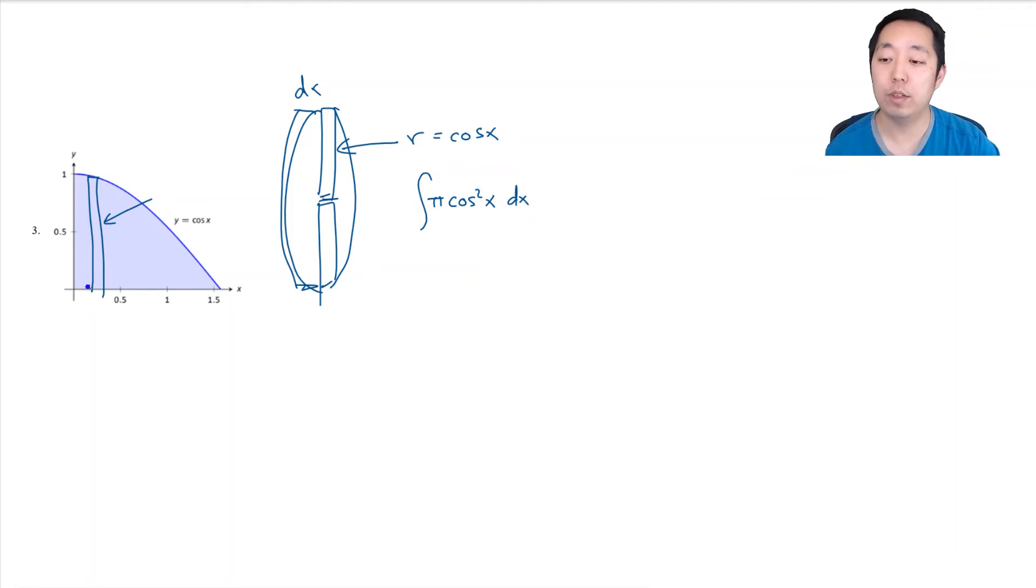And then I'm going to add up all of the disk volumes from 0 to... well, when cos(x) equals 0, that's at π/2. So π/2 here. Now to do this integral, you actually have to use an identity. When you do cos²(x), there's no substitution you can really do. This is equal to (1 + cos(2x))/2. So this becomes (π/2) ∫ from 0 to π/2 of (1 + cos(2x))dx.